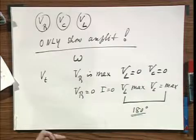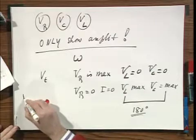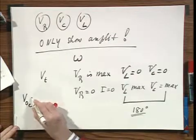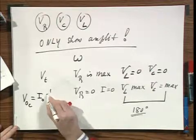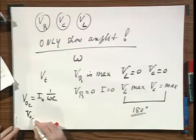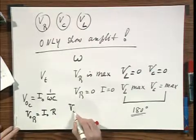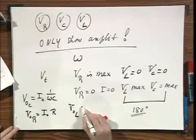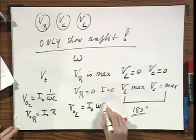These voltmeters are designed in such a way that all they record are amplitudes. So the amplitude of the voltmeter over the capacitor equals I zero times the reactance of the capacitor. The voltmeter over the resistor would read I zero times R, and the amplitude of the voltmeter over the self inductance would read I zero times omega L.